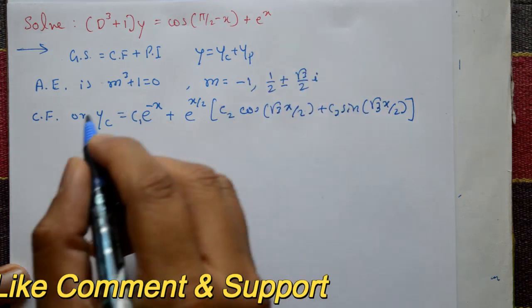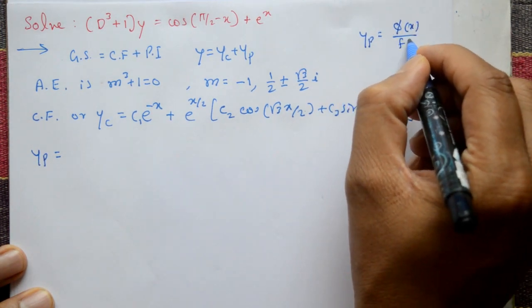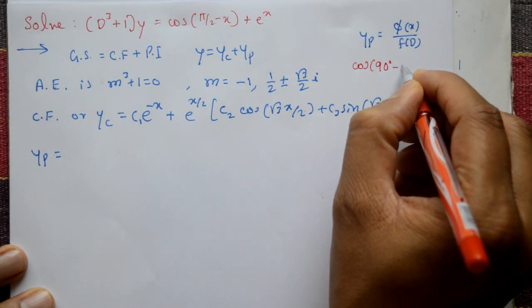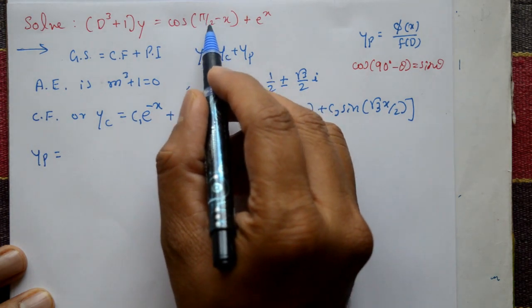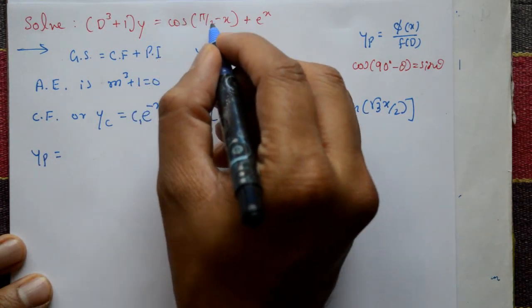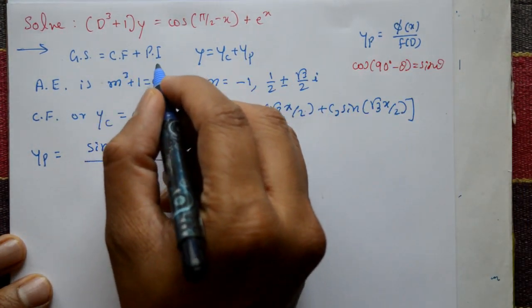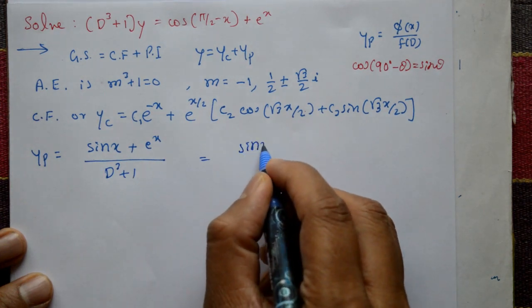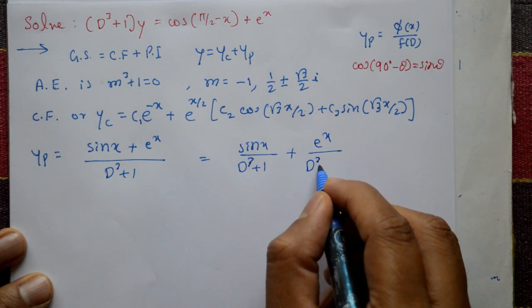Now find the particular integral yp. Generally yp = φ(x) / f(D). We know that cos(90° - θ) = sin θ, so cos(π/2 - x) = sin x. So the right-hand side becomes sin x. Therefore yp = [sin x + eˣ] / (D³ + 1), which we separate as sin x/(D³+1) + eˣ/(D³+1).